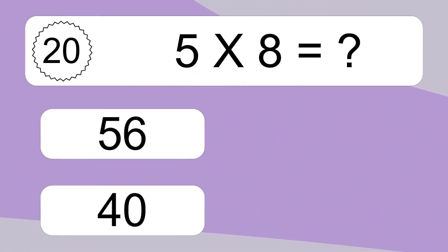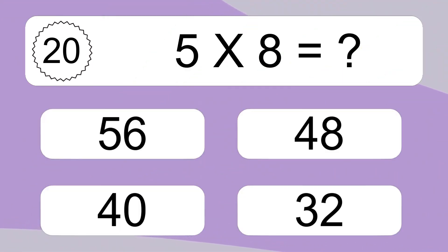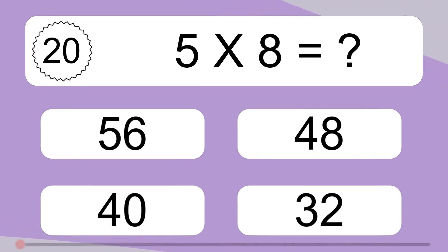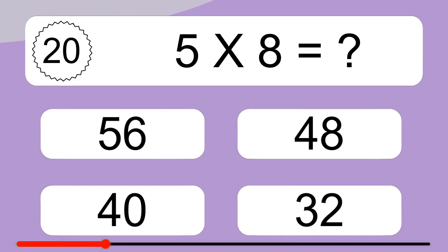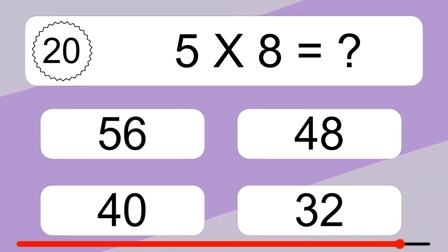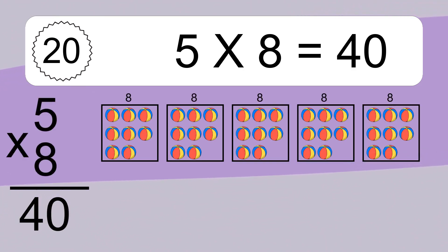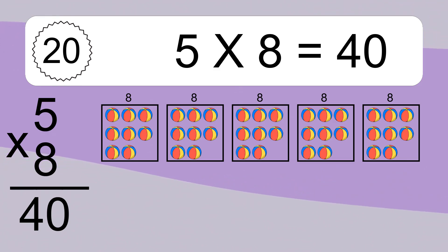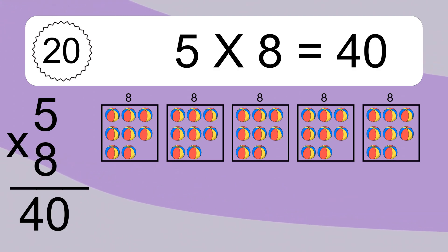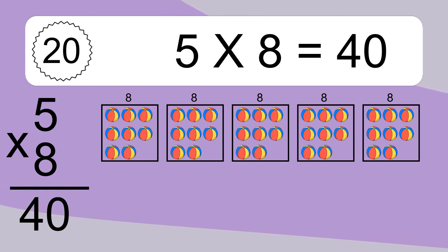5 times 8 equals what? 5 times 8 equals 40. We have 5 boxes, and each box has 8 colorful balls inside. If you count all the balls in all the boxes together, you will have 5 times 8 balls. This equals 40 balls.